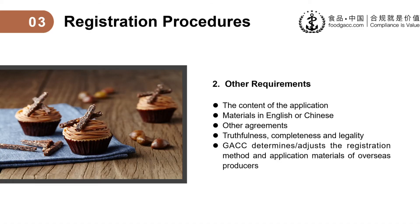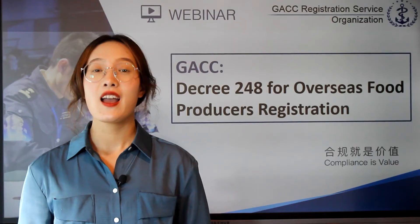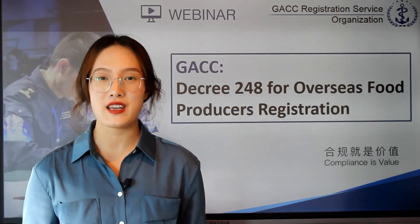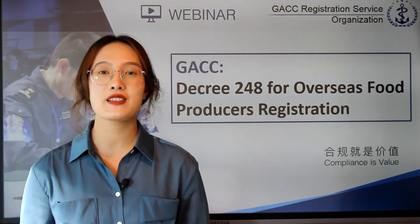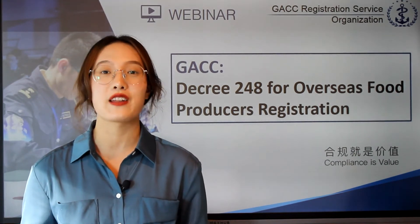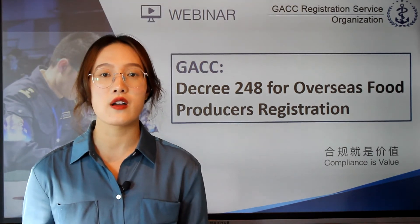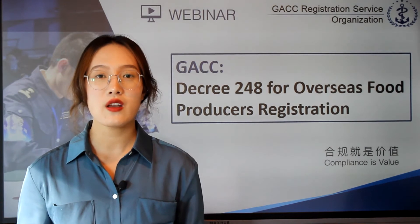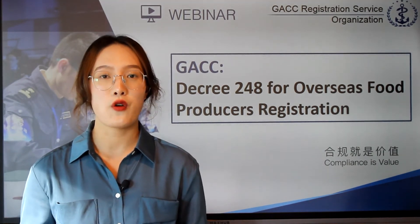The overseas producers and competent authorities shall be responsible for the truthfulness, completeness, and legality of the submitted materials. GACC determines or adjusts the registration application method and the application materials of overseas producers. After accepting the application from the CA or overseas producers, GACC or its entrusted institutions will set up review teams to conduct evaluations and reviews. There are several forms of inspection: document review, video inspection, on-site inspection, and other forms and their combinations.